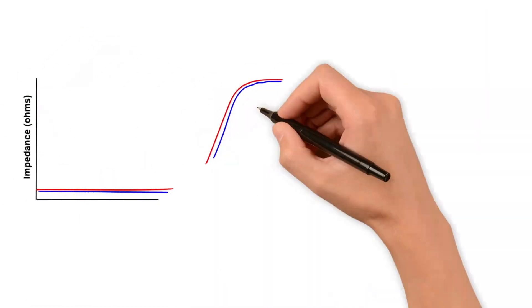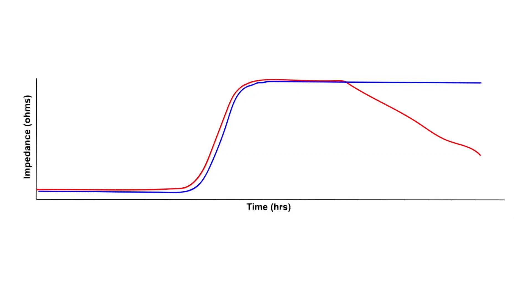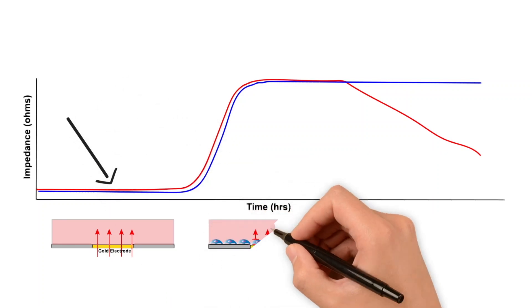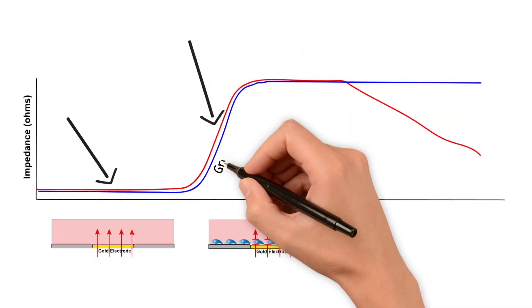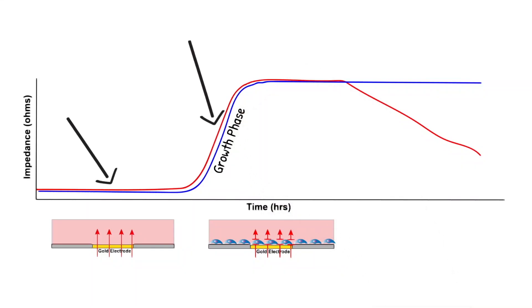ECIS software will report the results in graphical format of impedance versus time. When there are no cells covering the electrodes, the impedance will remain relatively flat. But when cells are seeded and begin covering the electrode, the impedance will rise in what we call the growth phase until the impedance reaches a plateau.